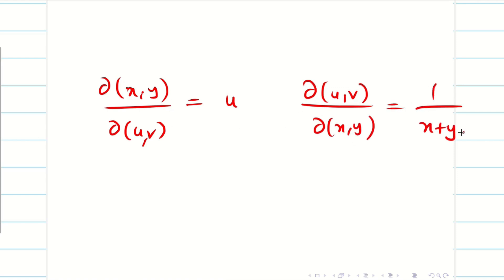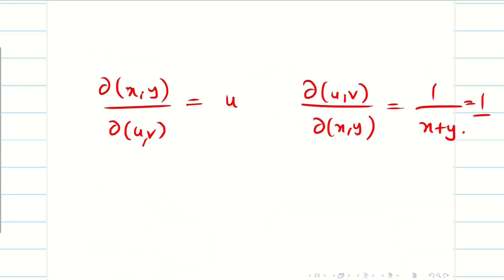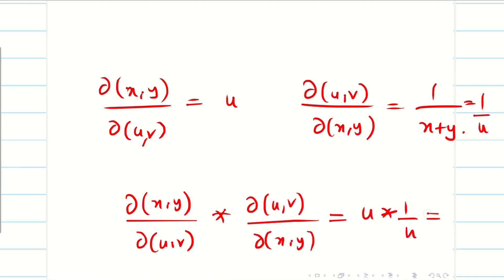Now write the final answer. ∂(x,y)/∂(u,v) = u, and ∂(u,v)/∂(x,y) = 1/(x+y). Note that u = x + y, so 1/(x+y) = 1/u. Therefore, j into j dash = u × (1/u) = 1. We have proved the third property: j into j dash equals 1.